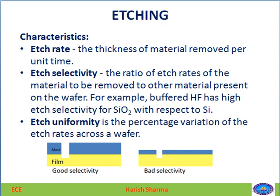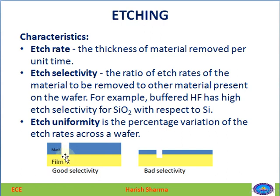As seen in the diagram, there are two materials: the SiO2 layer and the silicon substrate. Selectivity is the ratio of the etch rate of SiO2 removed with respect to the etch rate of the silicon substrate. For example, buffered HF has higher selectivity for SiO2 with respect to Si.